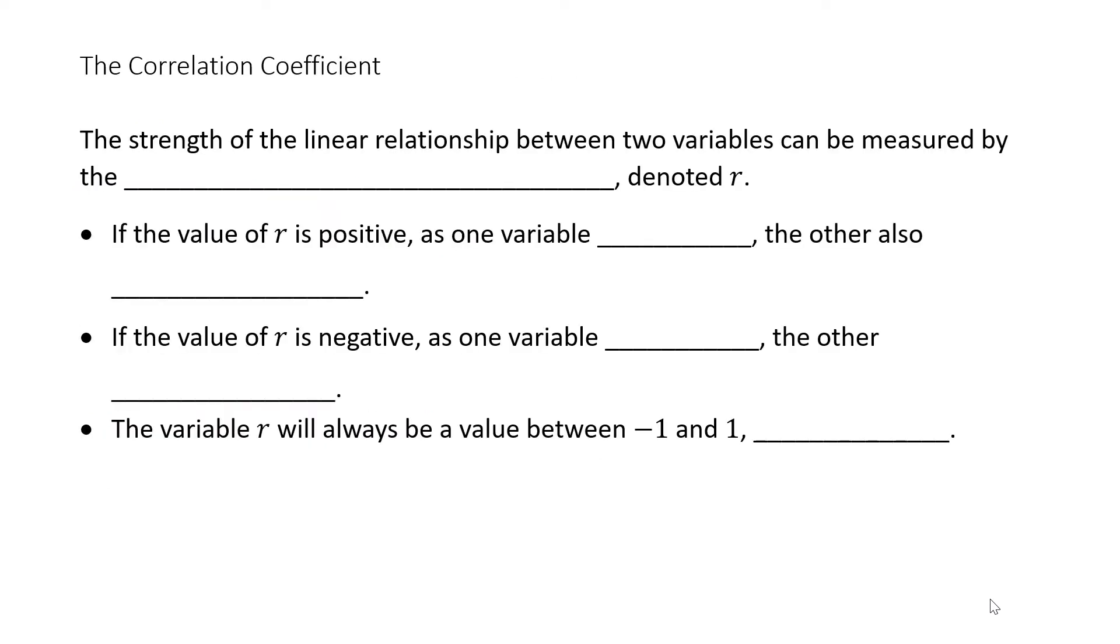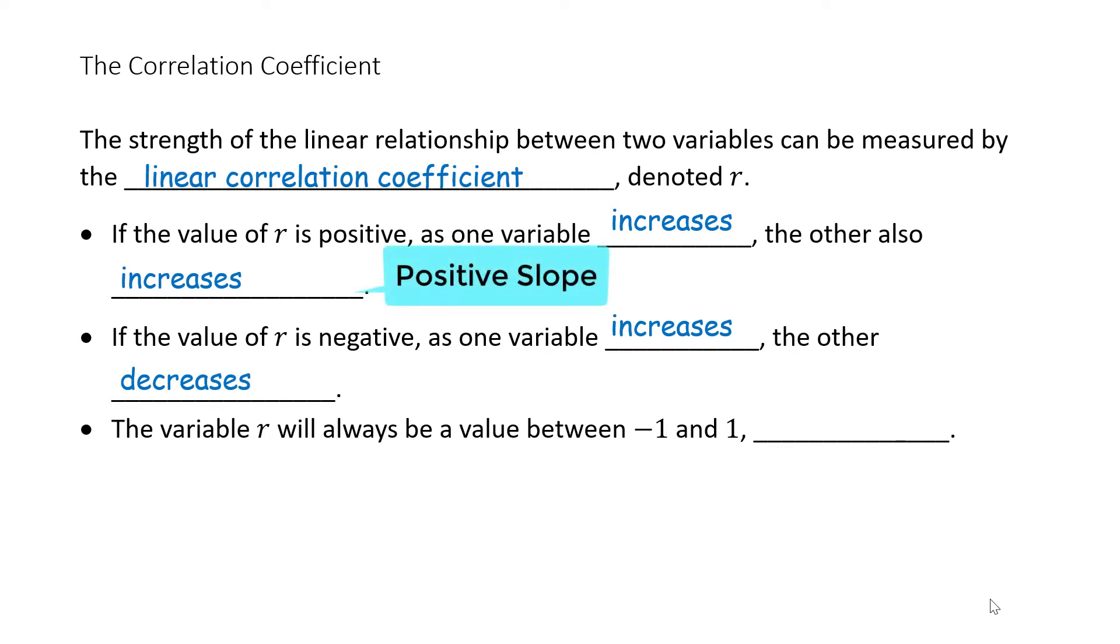Let's look at the correlation coefficient. The strength of the linear relationship between two variables can be measured by the linear correlation coefficient. It is denoted with a lowercase r. If the value of r is positive, then as one variable increases, the other also increases. Think of increase and increase as a positive slope, and increase followed with decrease as a negative slope. The variable r will always be a value between negative 1 and positive 1 inclusive.